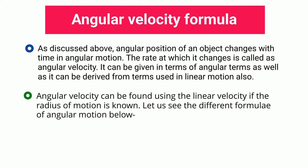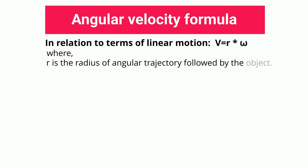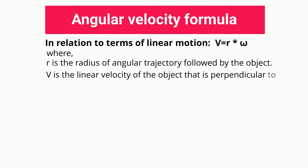In relation to terms of linear motion: r is the radius of the angular trajectory followed by the object, and v is the linear velocity of the object that is perpendicular to the circular path.